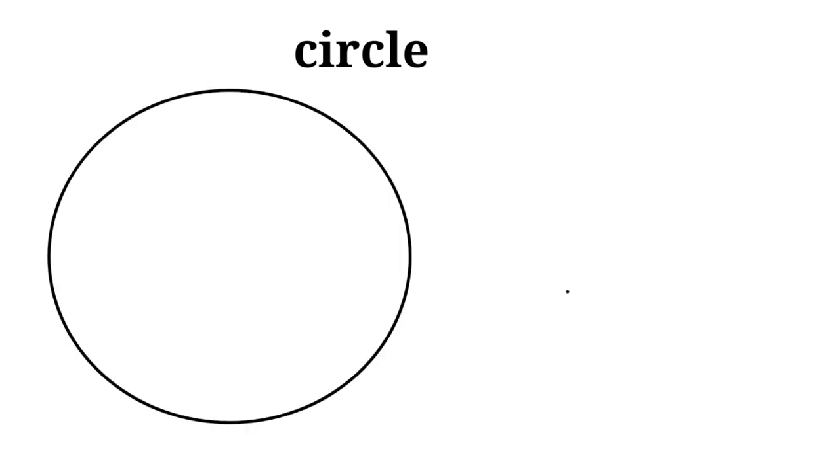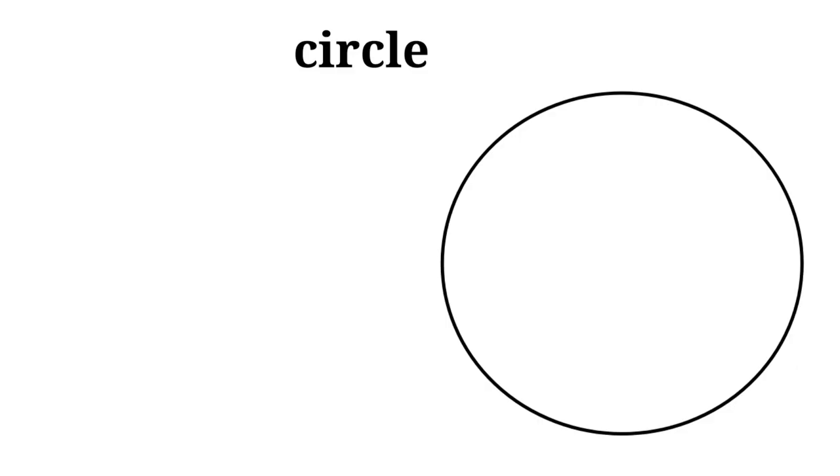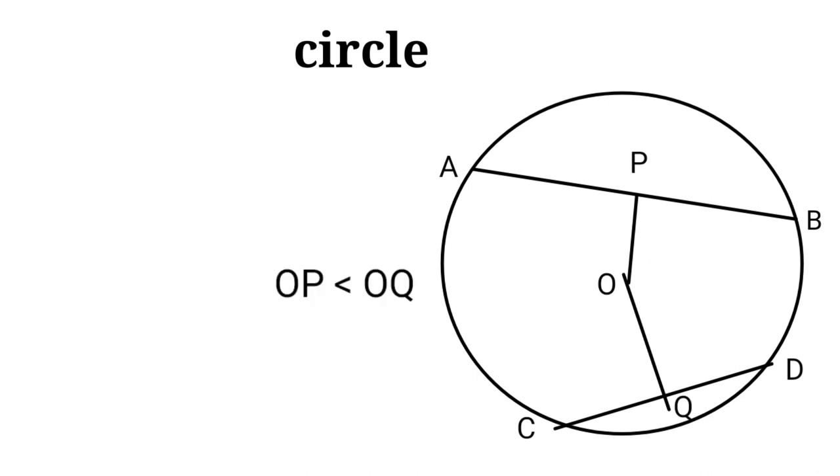Now we take a chord AB of a circle with center O. Drop OP perpendicular from O to AB. Then OP divides AB into equal parts AP and BP. Vice versa, the line joining the center O to midpoint P is always perpendicular to chord AB. Similarly, take two chords AB and CD with OP and OQ distances apart. Then the larger chord is always nearer to the center compared to the smaller one.